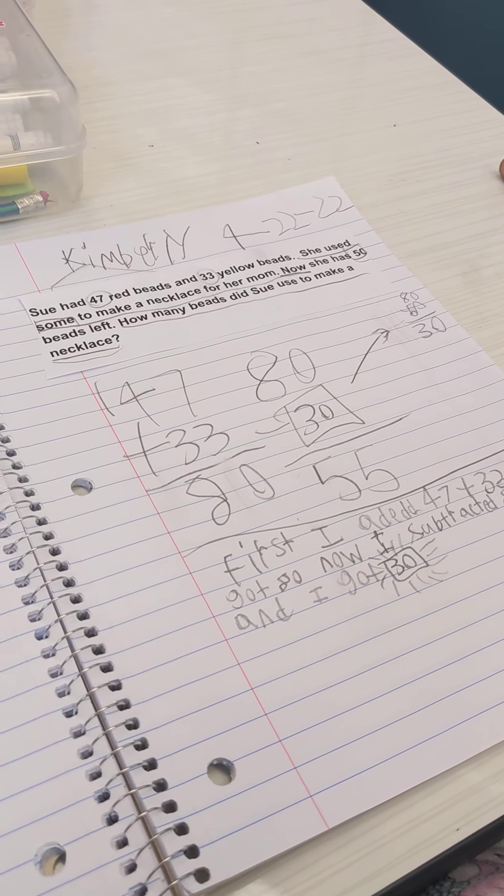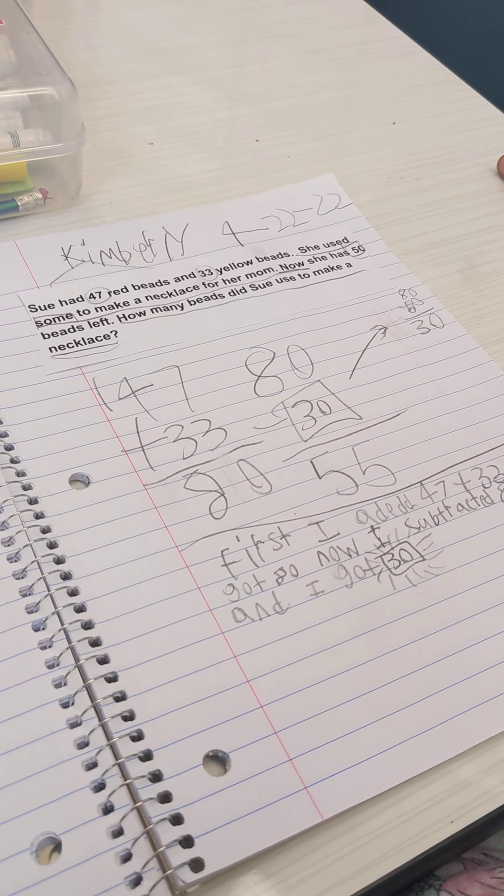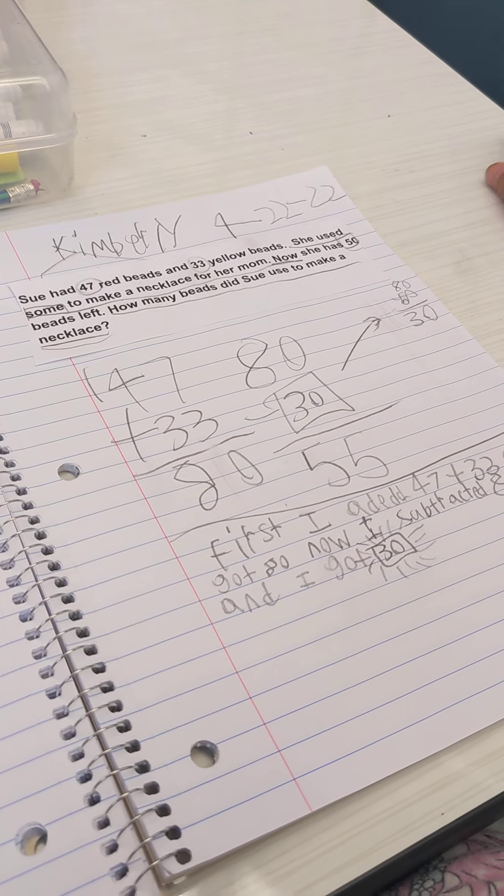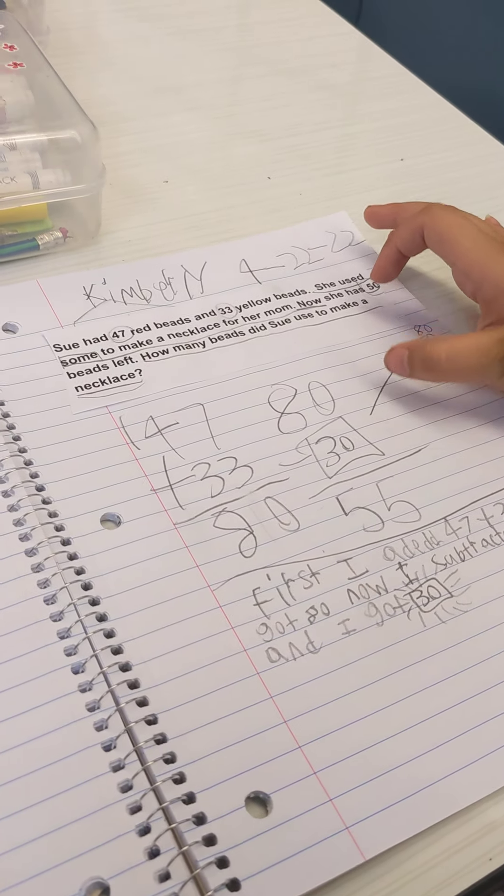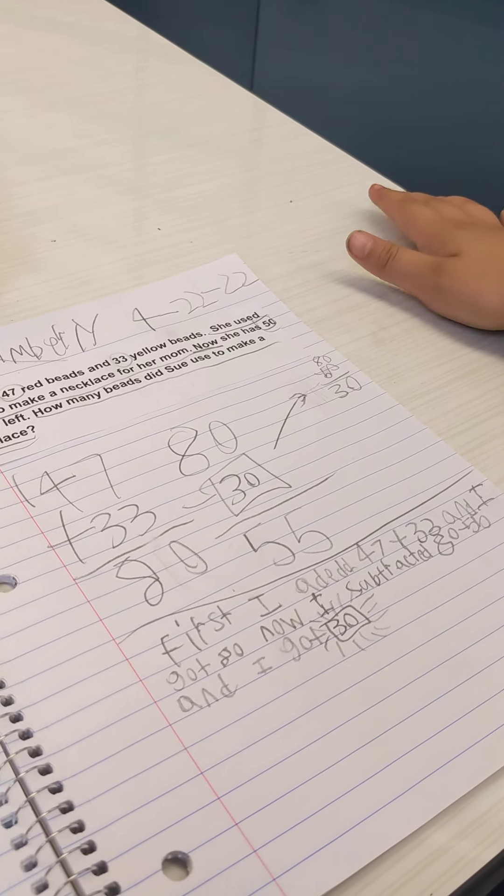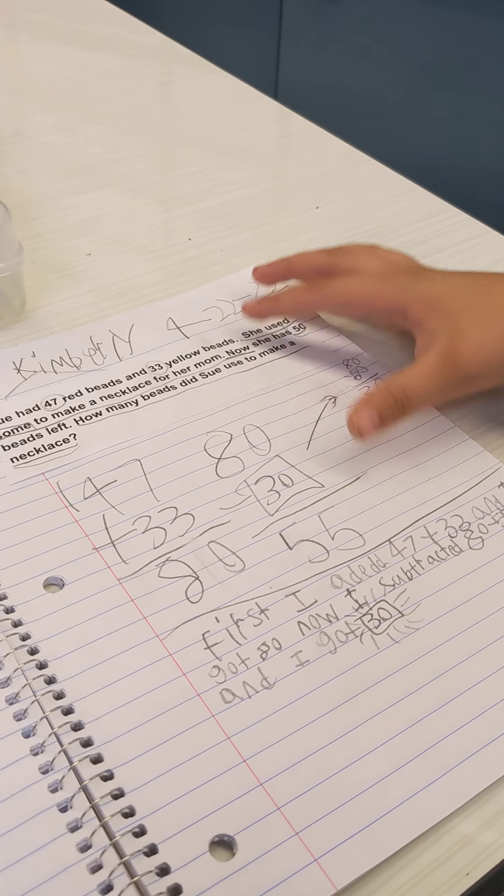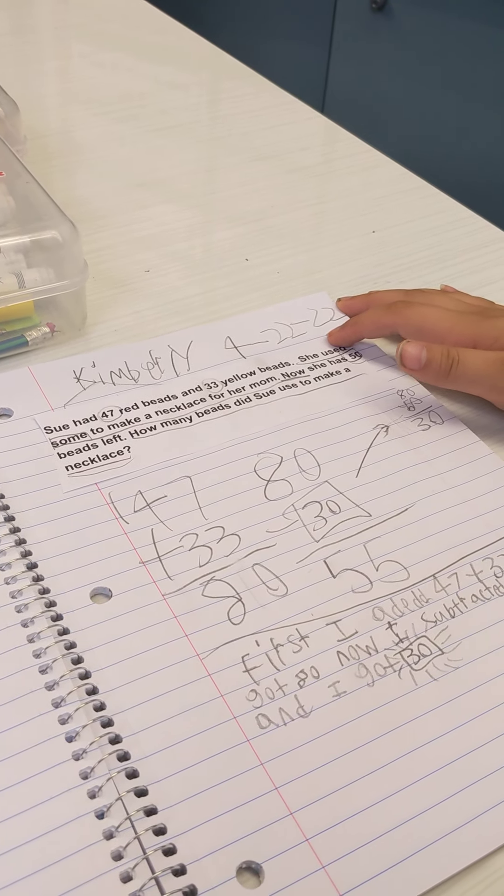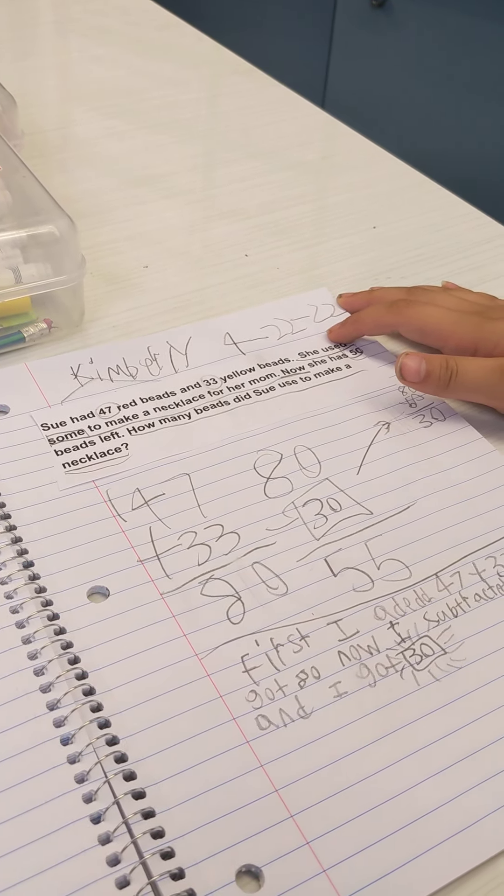Because if you don't do it, it will take more space. Okay, so here's my thinking. I'm gonna say I'd like to choose to add 47 to 33 because I need to know how many beads I have at the beginning.